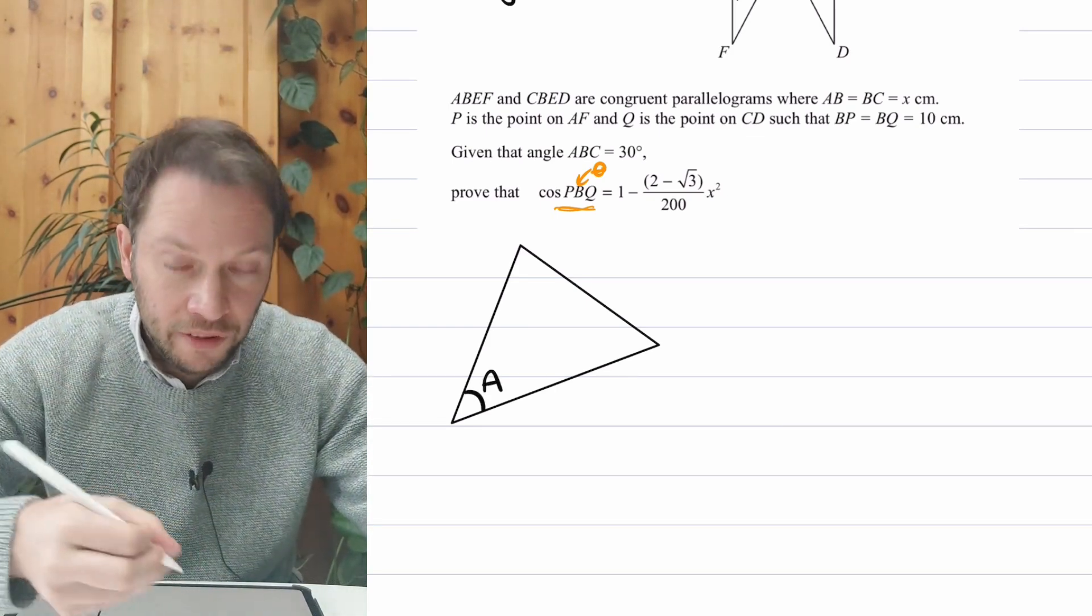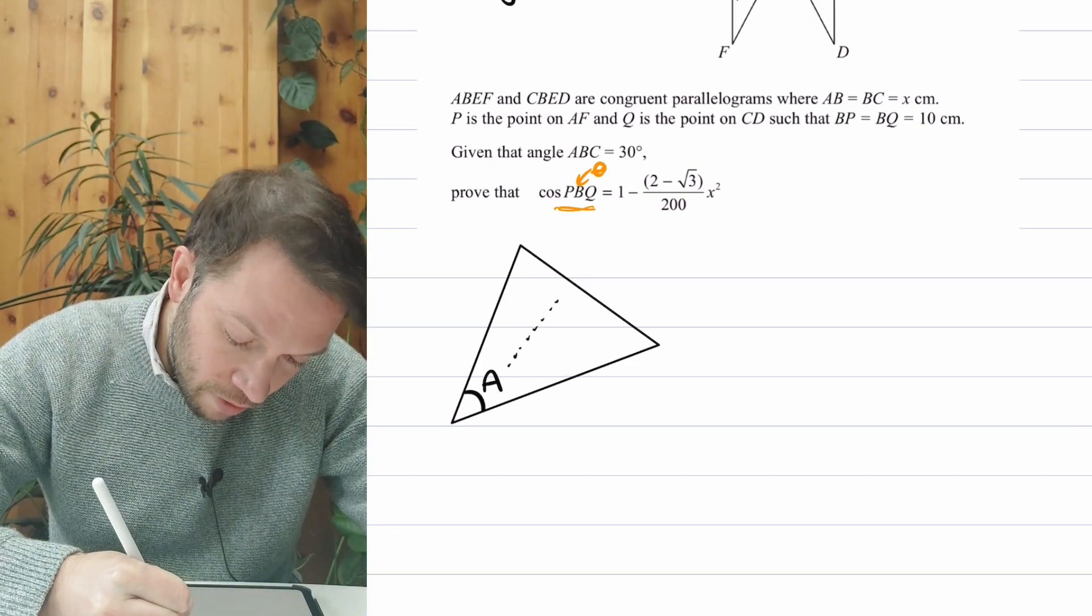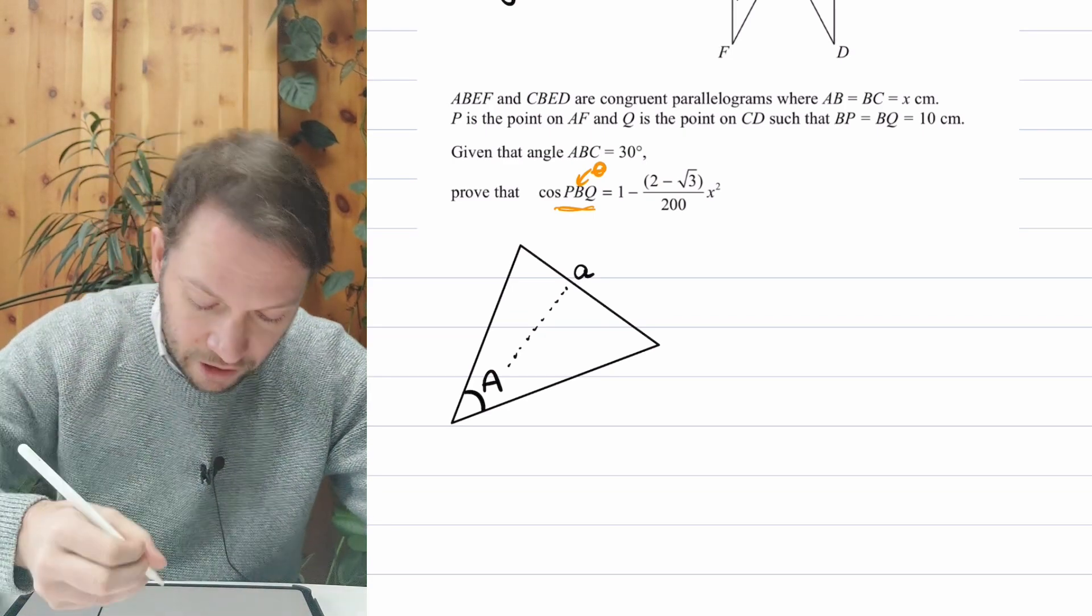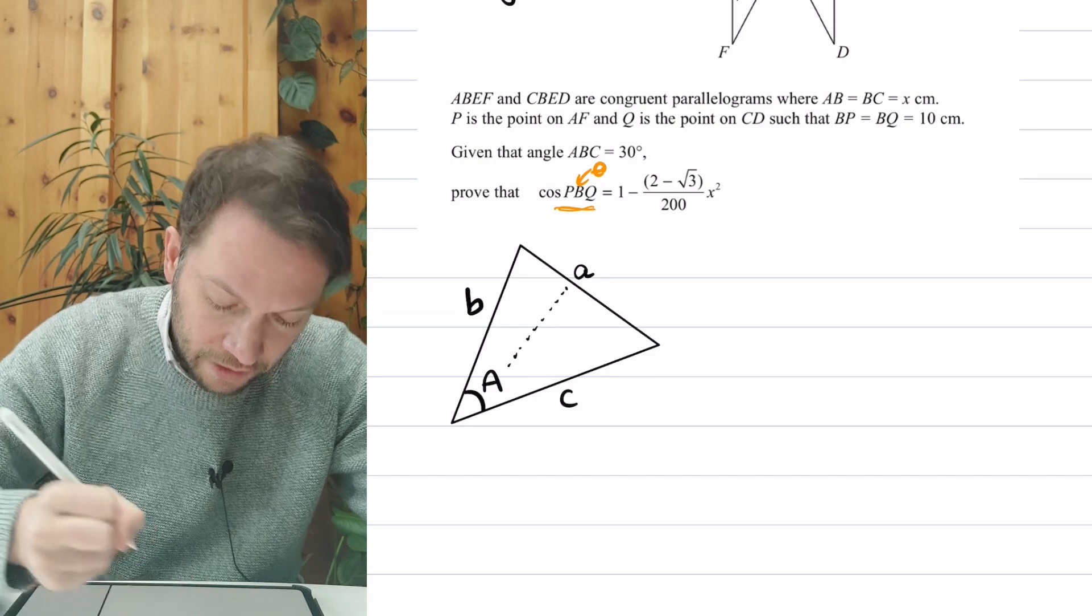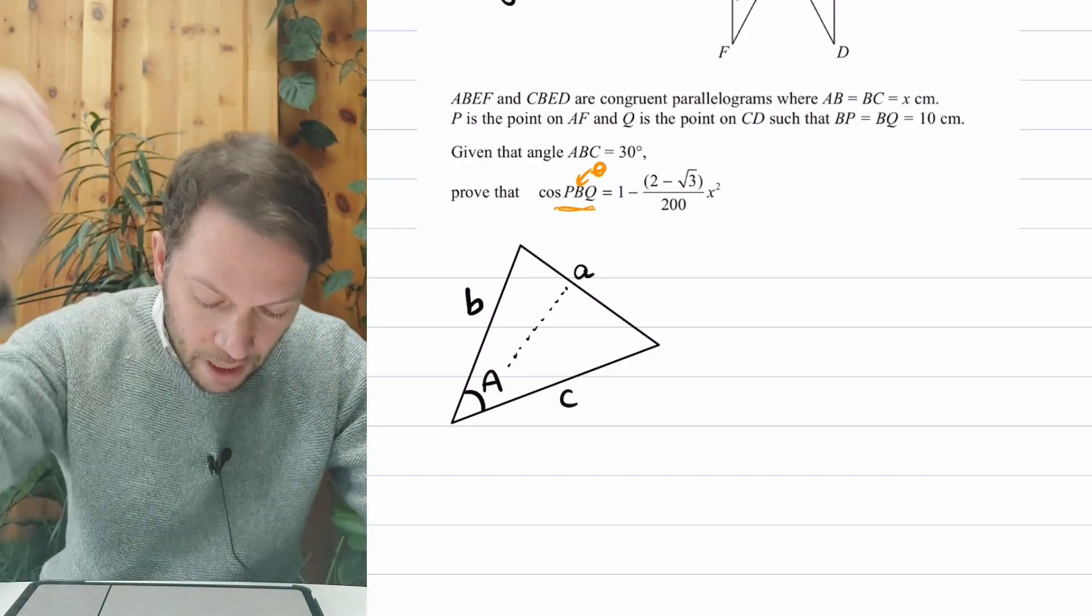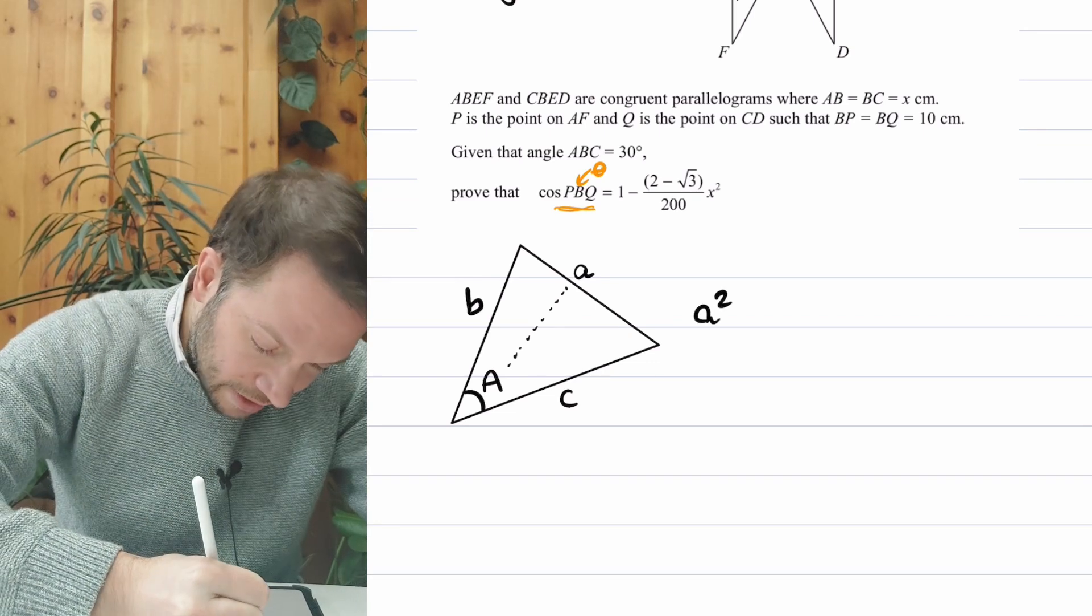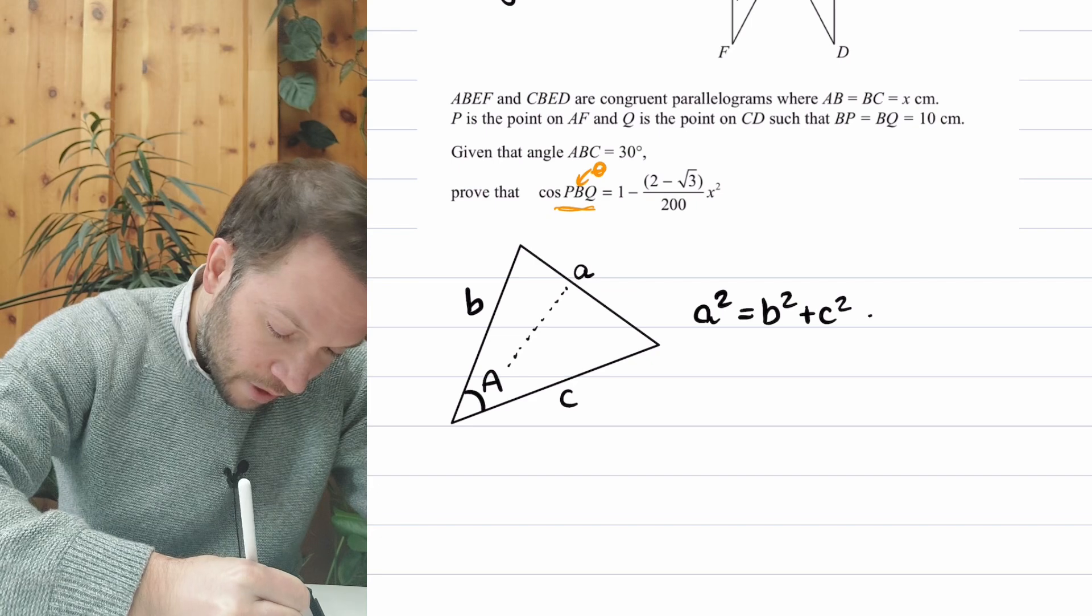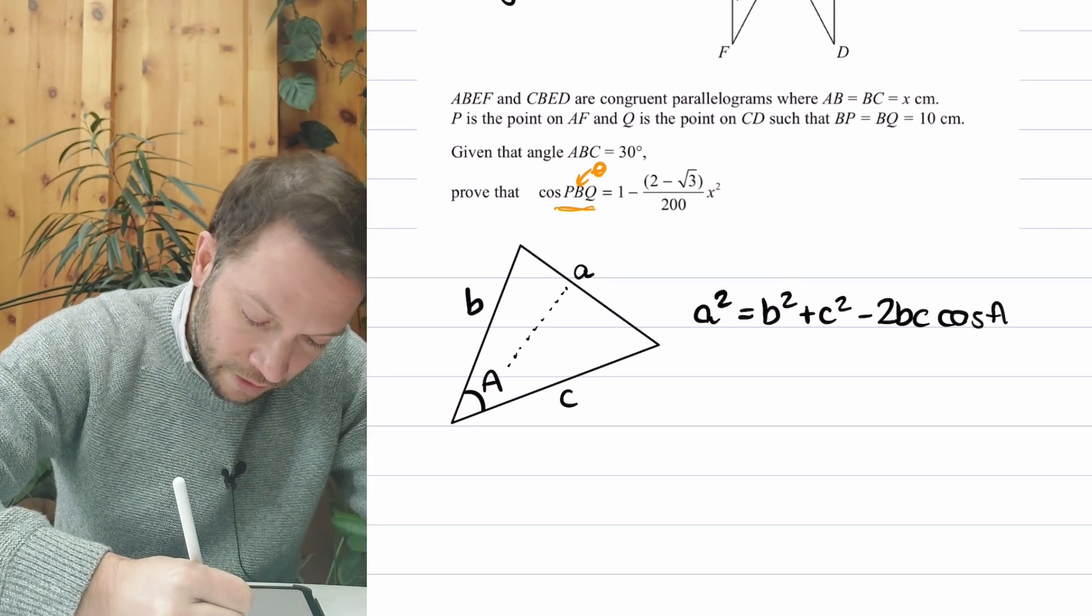Remember, the way we label the sides and angles is that if that's the capital angle A, then directly opposite is the side little a. So it's just a lowercase version. And then the other side, we can just label as B and C. We don't need to label the other angles for this particular problem. And the cosine rule is that A squared equals B squared plus C squared minus 2BC cos A. And that is the cosine rule.